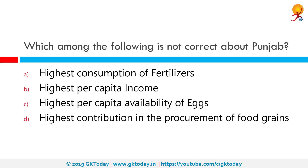Which among the following is not correct about Punjab? The incorrect option is B, highest per capita income — this is not a correct fact about Punjab. In fact, Chandigarh has the highest per capita income. Goa has the second highest, followed by Delhi, and Haryana is in fourth position.